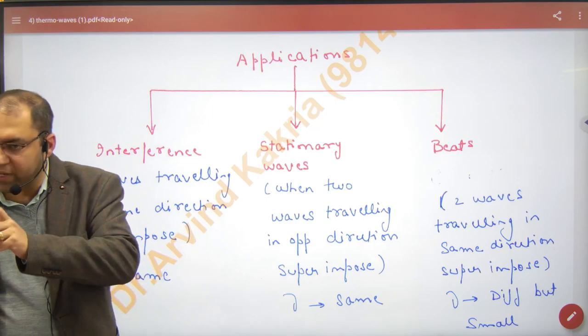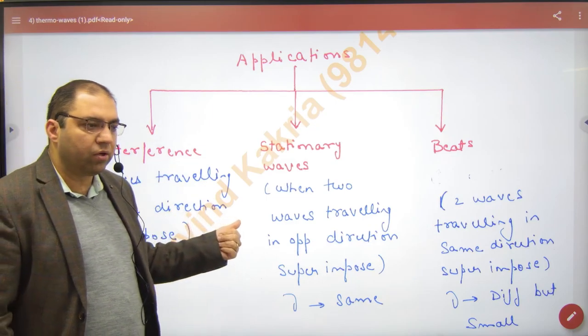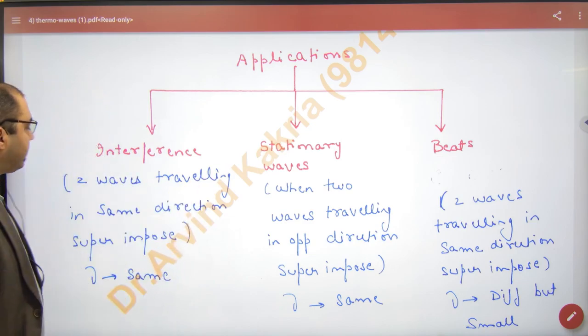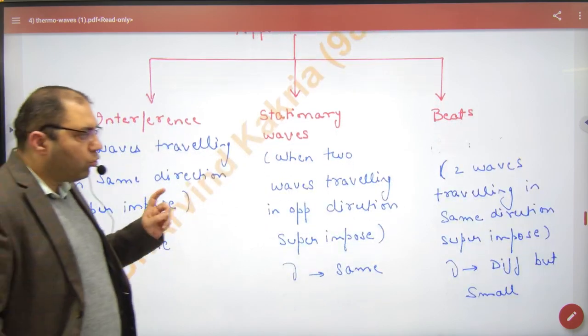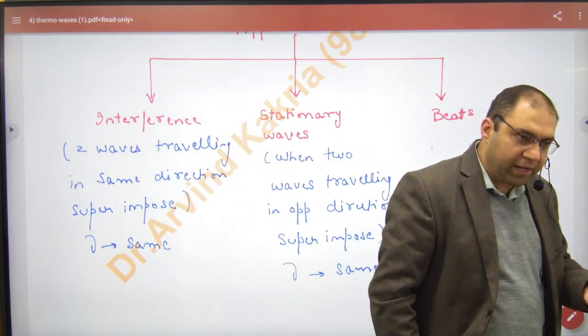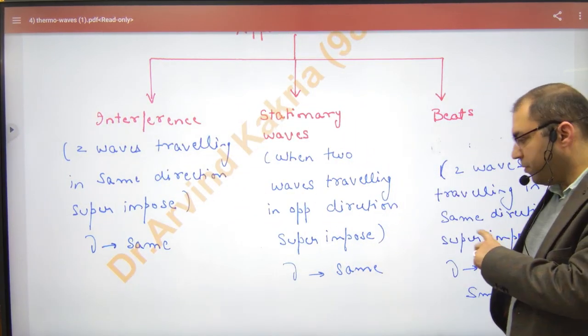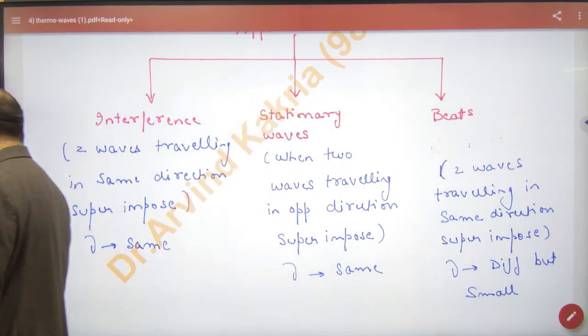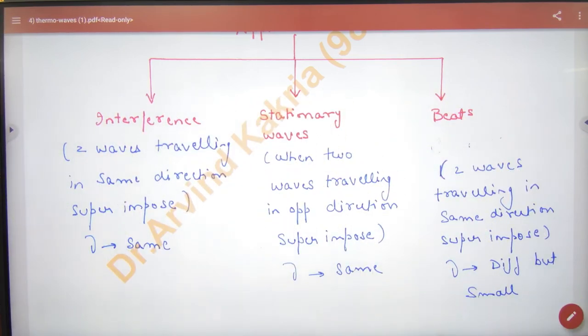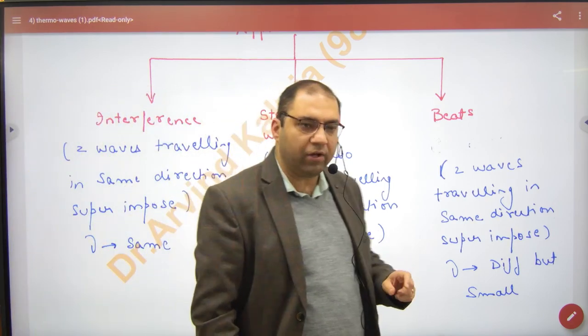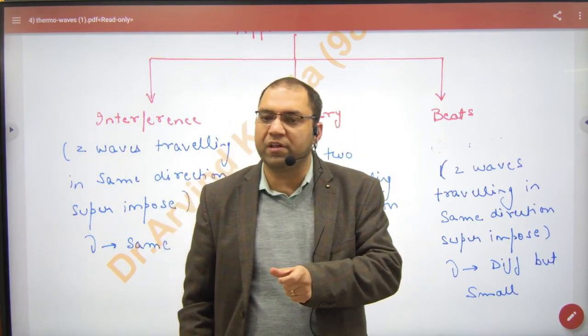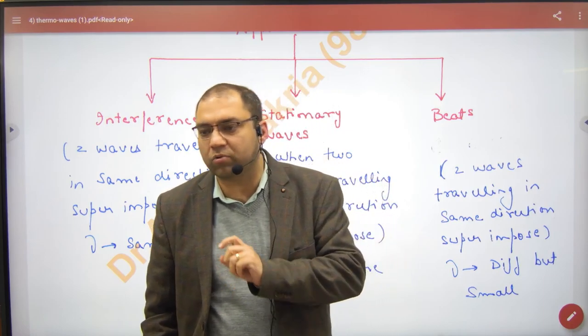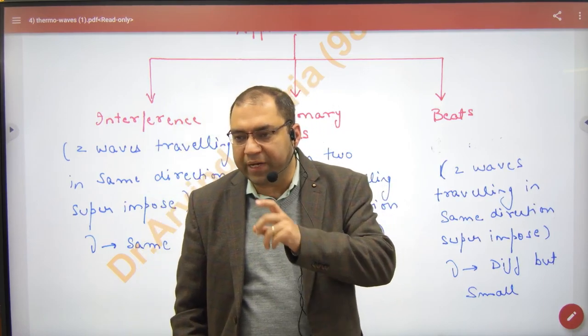Same, opposite direction. Next, beats - what is it? When two waves traveling in the same direction superimpose, you get - but frequency, what is it? Different. So you can check that frequency is different, but the frequency difference has to be small. So what is it? Beats - you generate beats, music beats.